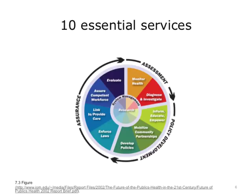These ten services fall under three primary categories — assessment, policy development, and assurance — as originally defined by the 1988 Institute of Medicine report, The Future of Public Health. Much of the data public health uses to monitor health commonly originates from the delivery of clinical care. A classic example of this is communicable disease surveillance. This monitoring may result in important messaging back to providers based on findings, and many public health campaigns targeting improvement of individual health require analysis of clinical data to measure final outcomes.